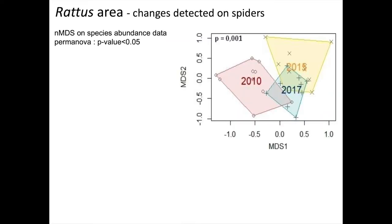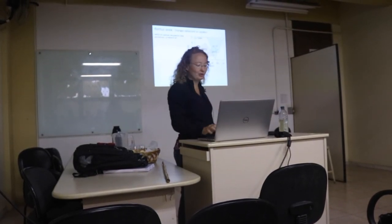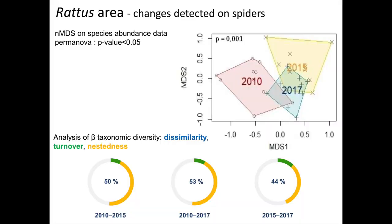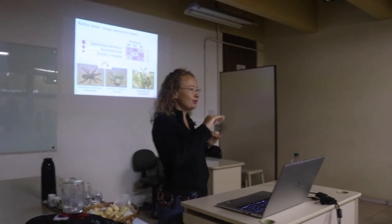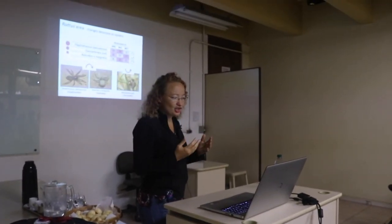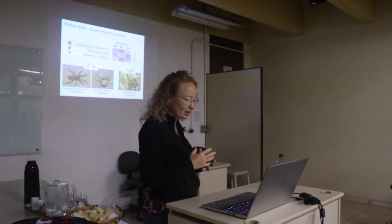Same thing for the spider. There are changes in the composition. All the years are different, so there's no before and after thing like in the Carpobrotus area. We can see that 2010 is one way and 2015, and then 2017 is in the middle kind of coming back. It's kind of weird. We don't really know what's going on. Most of it is due to nestedness, so species being gained or lost between years. And we didn't see any big increase or decrease in abundances of any species.